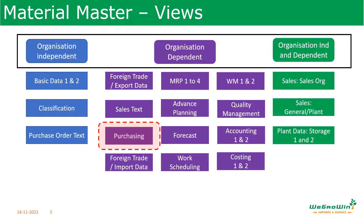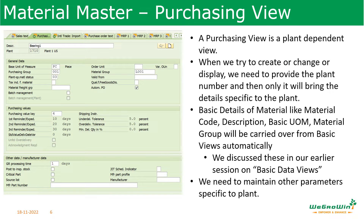Purchasing view is organization dependent — it is a plant dependent view. So we have to maintain the parameters which are relevant to the plant. Whenever we try to create, change, or display the purchasing view for a specific plant, we need to give the plant number. The basic details of material like material code, material description, basic unit of measurement, and material group are all carried over from the basic view — we already defined them in basic data 1 and basic data 2 views, so we don't need to enter them again here.